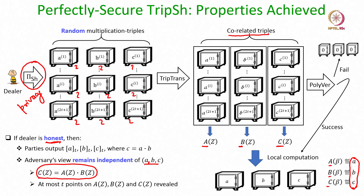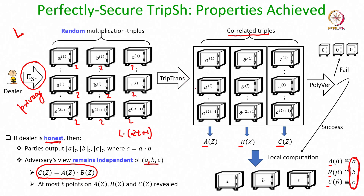So we have proved that if the dealer is honest, at the end of the protocol there is one secret shared triplet known to the dealer which is a multiplication triplet, which is random for the adversary and which is secret shared. At the end of the protocol there is only one output — the final secret shared triplet (A, B, C) — even though the dealer started the protocol with 2t plus 1 triplets. Dealer has secret shared 2t plus 1 triplets, all are transformed, all are verified in the verification process, and the privacy of some triplets is lost; that is why at the end only one triplet is considered to be secret shared on behalf of the dealer. This means if the dealer wants to secret share L number of multiplication triplets it has to do this process L times.